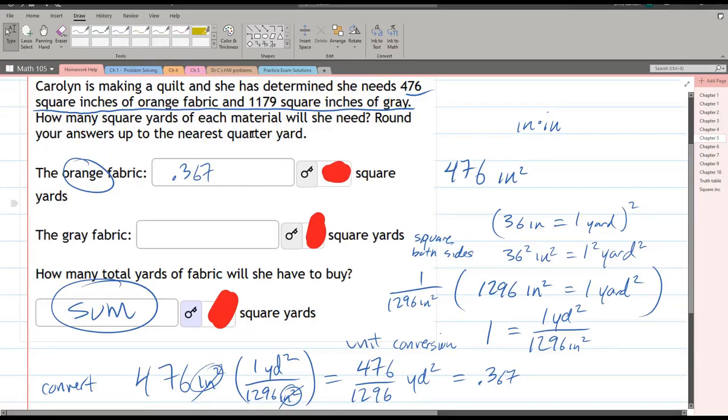Nearest quarter yard. Okay so we better go ahead and round this. It would be either 0.25 or 0.5. What's it closer to? I think that's right in between. It is closer to 0.25.